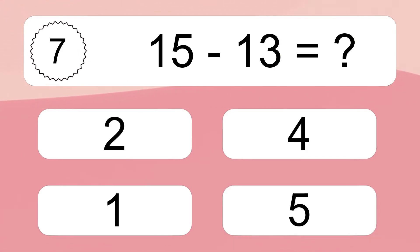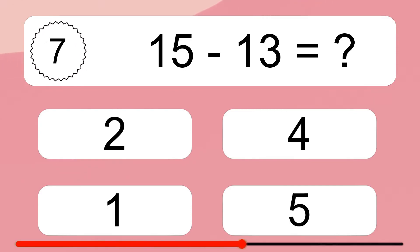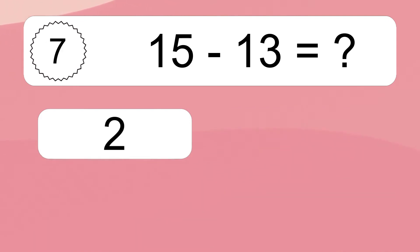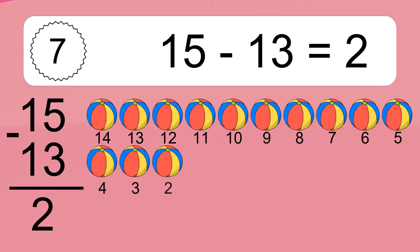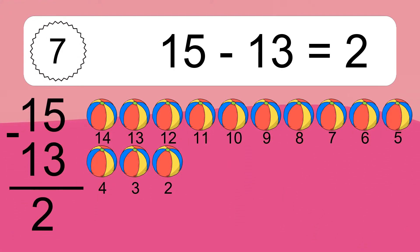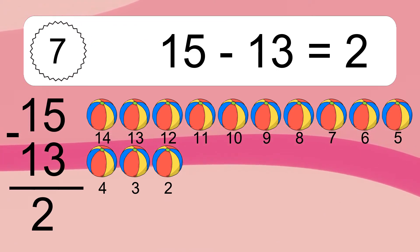15 minus 13 equals what? 15 minus 13 equals 2. Let's count it: 14, 13, 12, 11, 10, 9, 8, 7, 6, 5, 4, 3, 2.